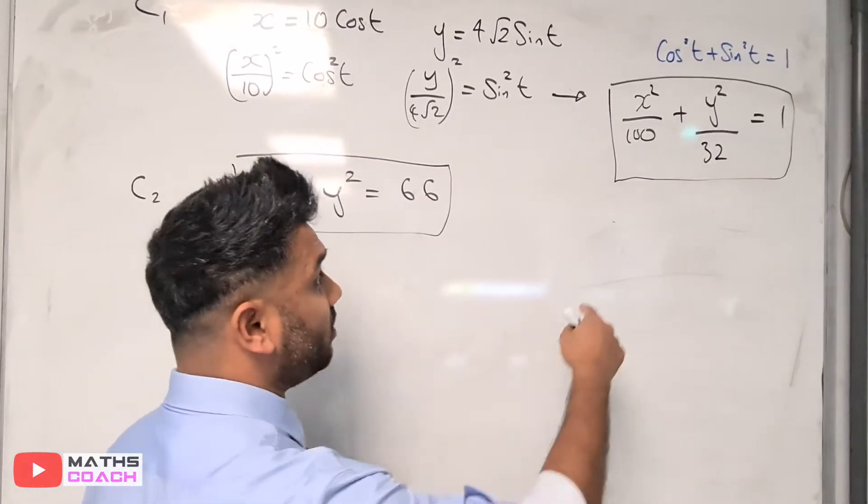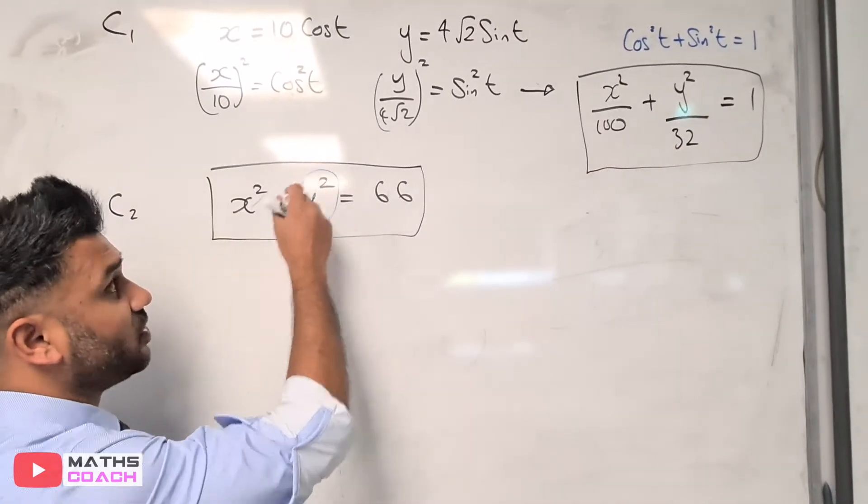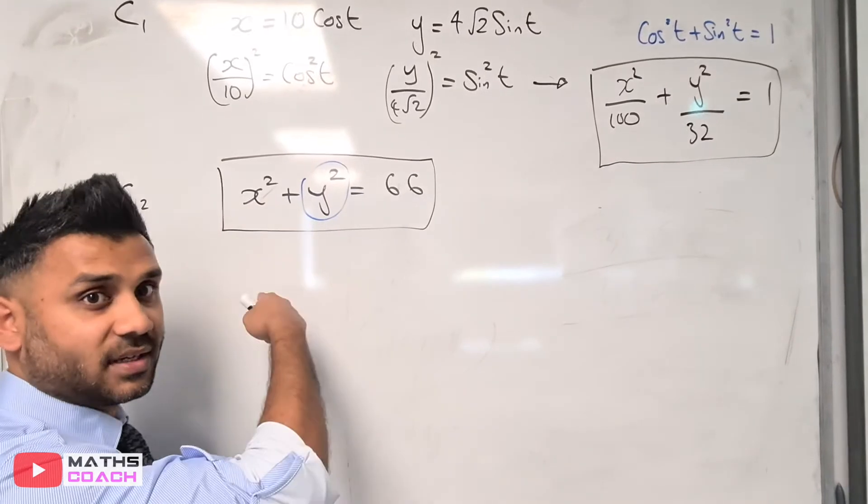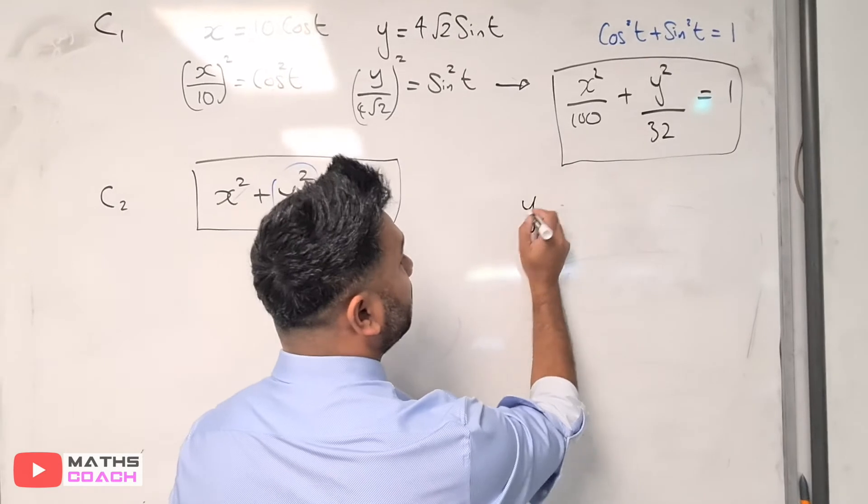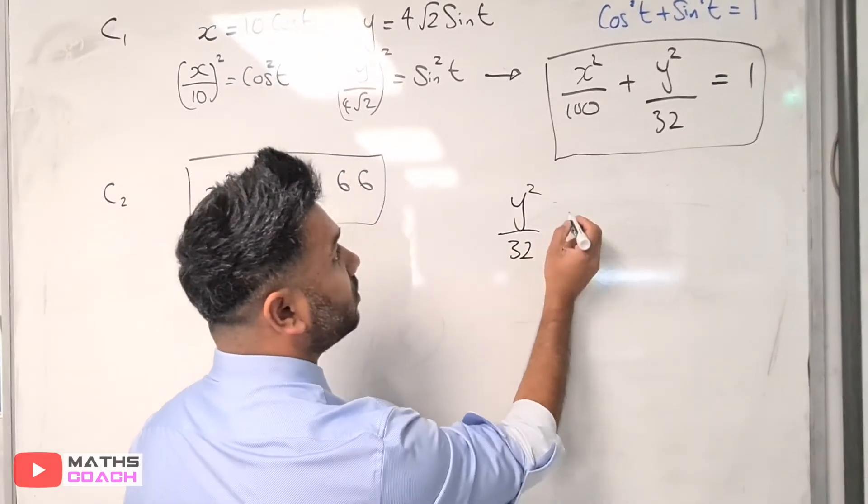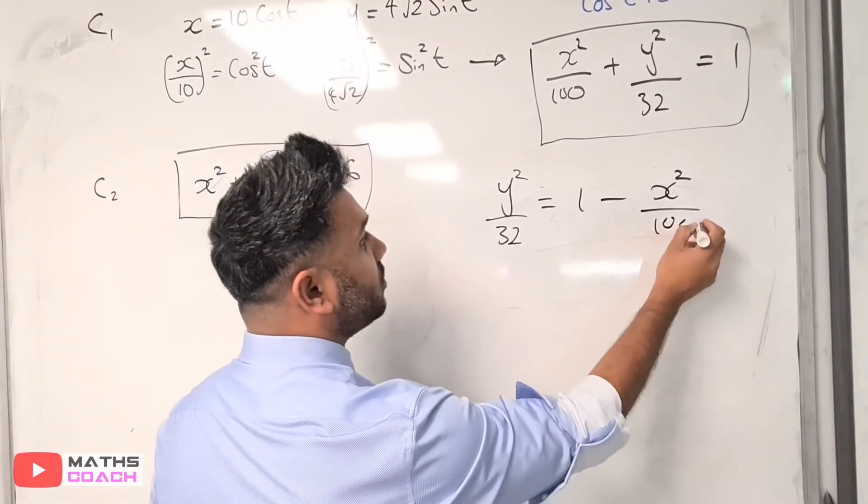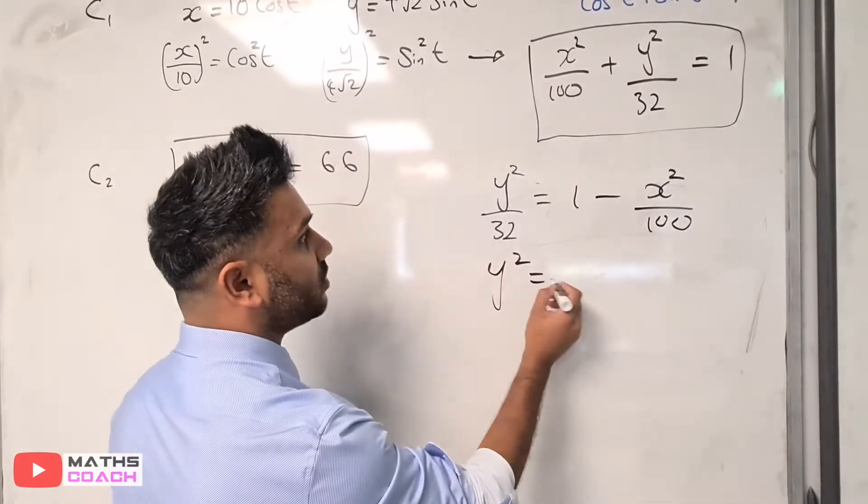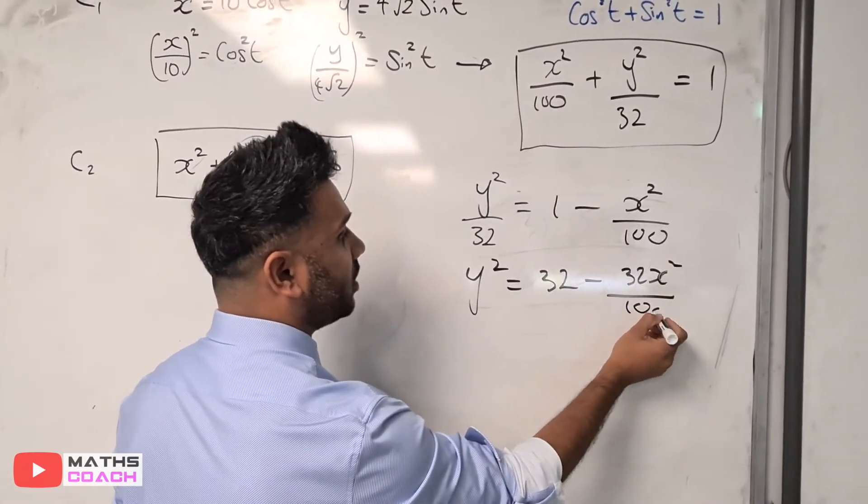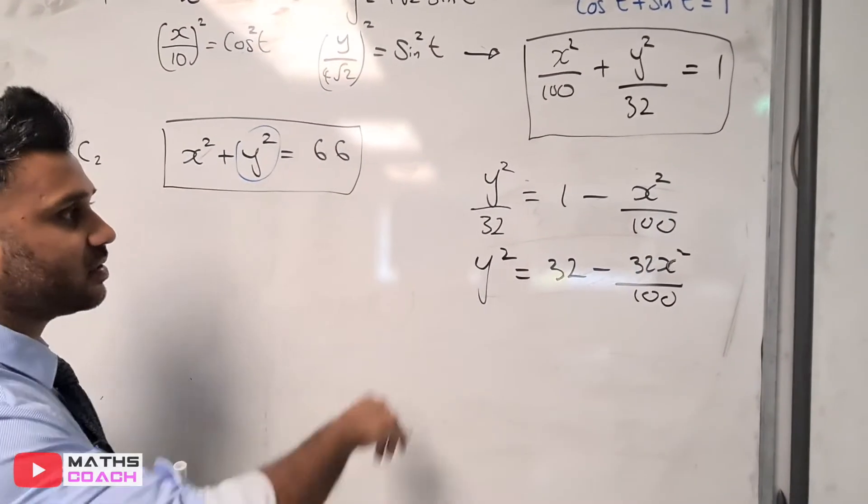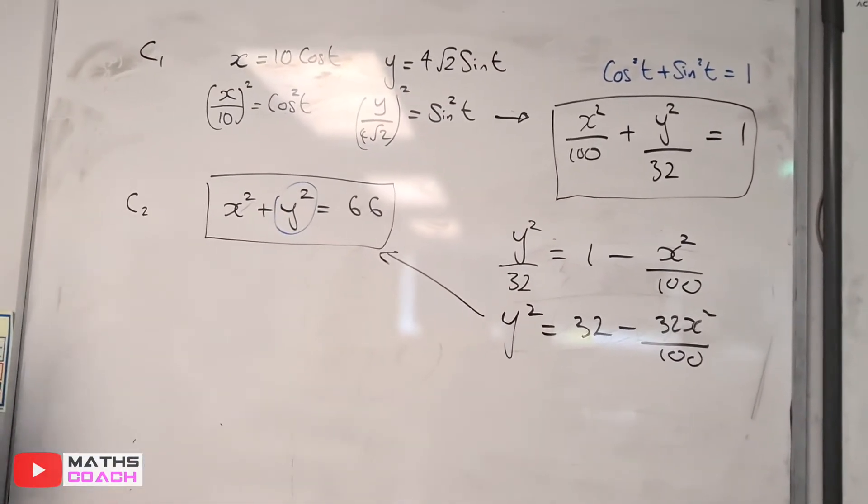There are many approaches you can take. I'm going to make y² the subject and substitute that into this equation to find x. Making y² the subject: y²/32 = 1 - x²/100, or y² = 32 - 32x²/100. I'll substitute this y² into the equation for curve 2.